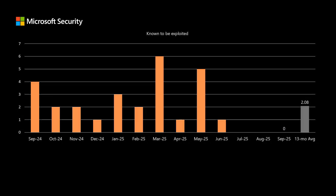Another thing not included in the CVSS score is whether or not a vulnerability has been known to be exploited at the time of release. A publicly disclosed vulnerability is kind of a theoretical risk, but these are very real risks — where either Microsoft directly or through our partners have noticed some sort of exploitation of a vulnerability prior to release. This month, there are no vulnerabilities that were known to be exploited, which is lower than our average of just over two over the past 13 months.